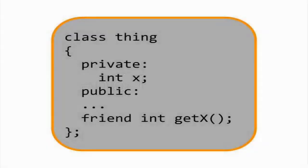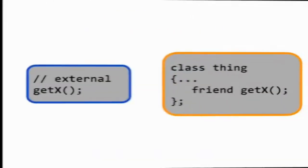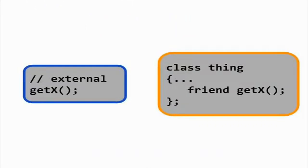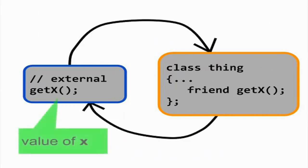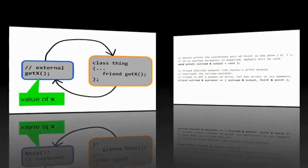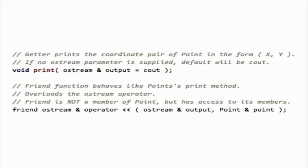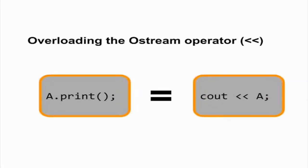Sometimes a friend function is included in the method declarations of a class. The friend function is not a true member of the class; instead, it is the signature of a function that is external to the class. The keyword friend lets the function have access to the private data members of the class. Friend functions are commonly used for overriding the iostream operators so that you can print the contents of an object using the double angle brackets rather than a local print method.